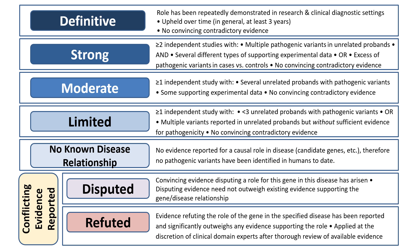Moderate and limited gene disease classifications have less compelling evidence, respectively. The category of no known disease relationship is reserved for those genes that may be suspected to be associated with a particular disease — for example, they might belong to a gene family known to be associated with the disease — but in which no human variants have been reported. If there is evidence available to contradict the gene disease relationship, the pair may be classified as disputed or refuted depending upon the strength of the contradictory evidence as compared to the supporting evidence. Clinical validity classifications are subject to change over time as new evidence emerges, and as such, classifications are always going to be dated and are re-reviewed at specified time intervals.